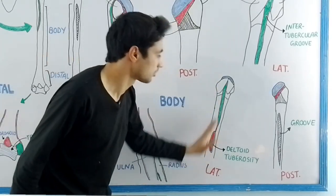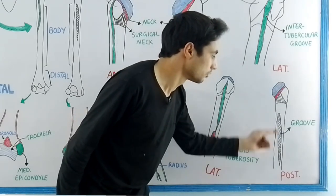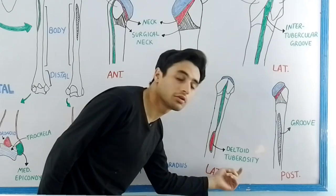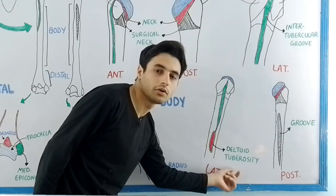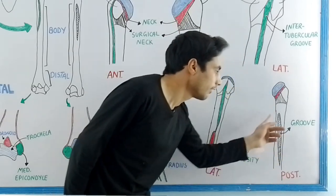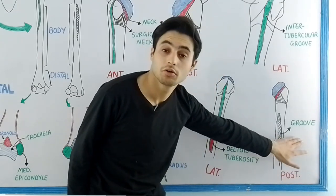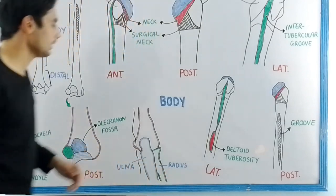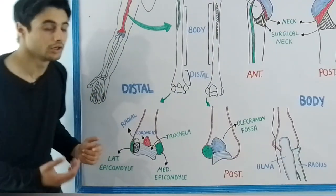Now looking at the body or shaft of the humerus bone — this is the lateral view and this is the posterior view. The lateral side has the deltoid tuberosity, which is the attachment site of your deltoid muscle. The posterior side has a groove for the radial nerve, known as the radial groove.